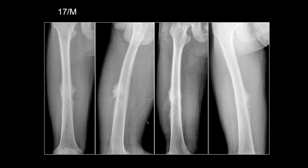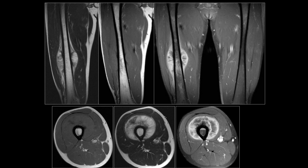Jennifer, 17-year-old male. So here we see some cloud-like matrix along the middle third of the femoral diaphysis. There's some periosteal reaction and some hair-on-end appearance here too. I'd be concerned about a malignant lesion such as osteosarcoma or Ewing sarcoma.